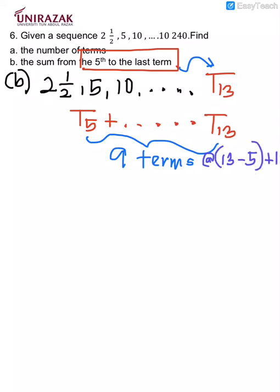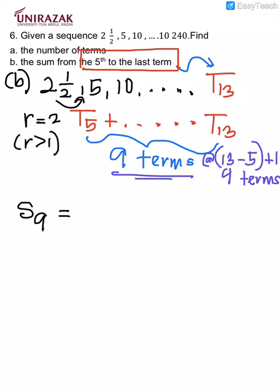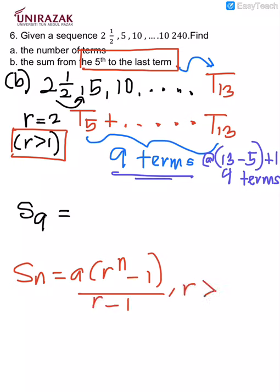This is one of the options you can use to get how many terms are there. In short, I have 9 terms where I need to find the sum. I already know the r here is 2, and the value of r is more than one. Why am I highlighting this keyword r is more than one? Because the formula that is involved here will be the formula when the value of r is more than one. So if I go according to the substitution, the r is very clearly stated: 2, so 2 power 9 minus 1, 2 minus 1.